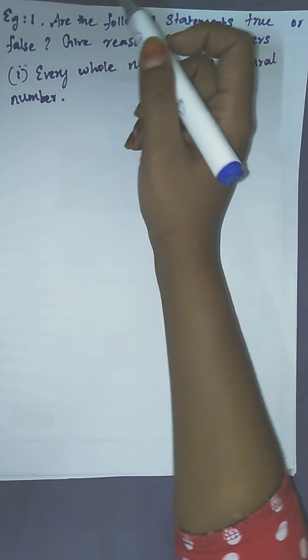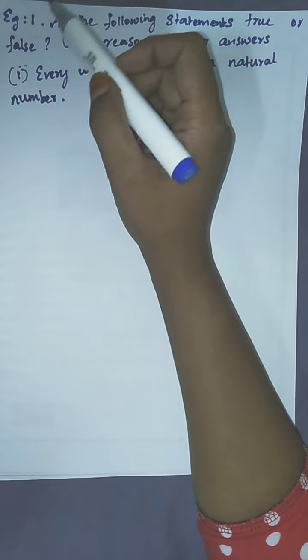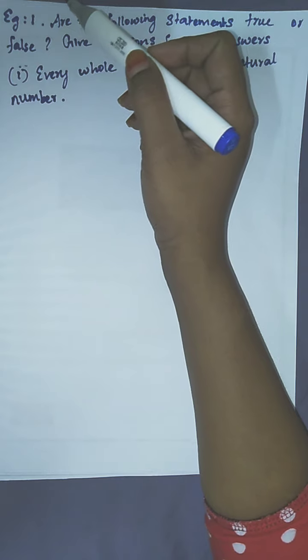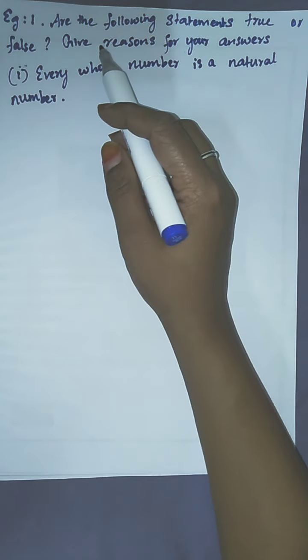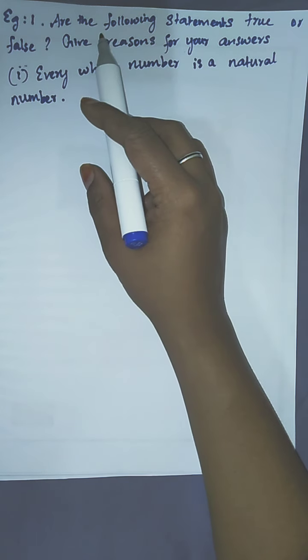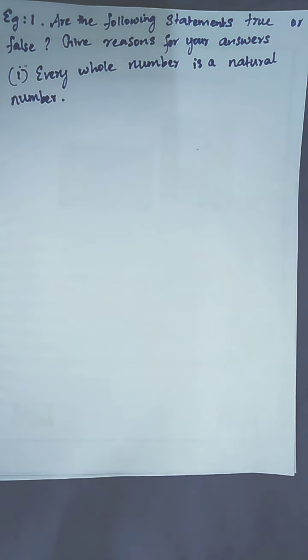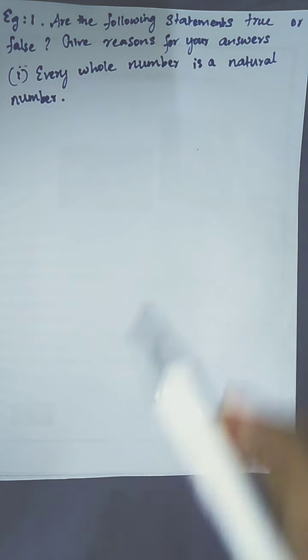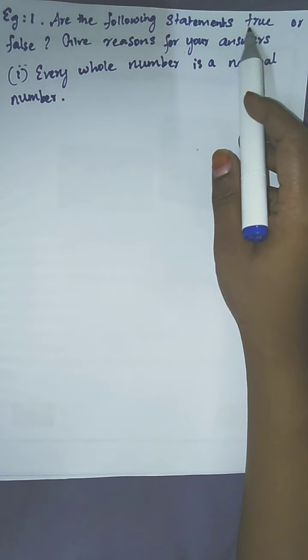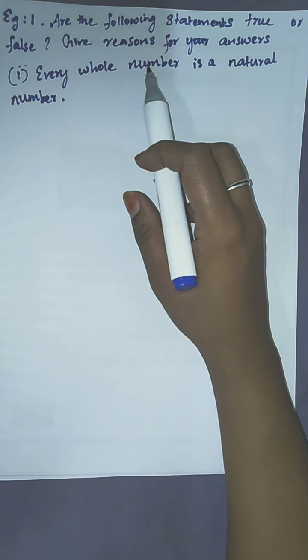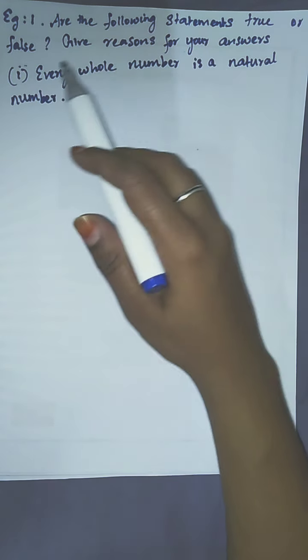Hello everyone, welcome to Learn ECMAX, this is Sinju. Now we are going to see Example 1 from Chapter 1. The question is, they have given some statements and we have to identify whether each is true or false and we have to mention the reason.